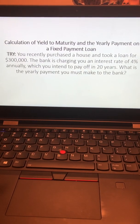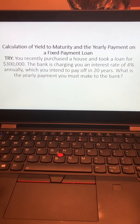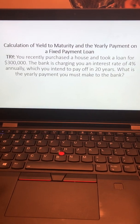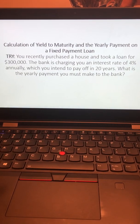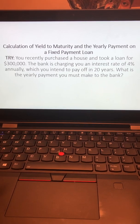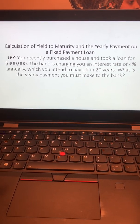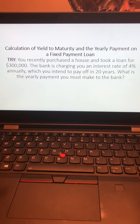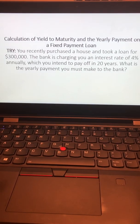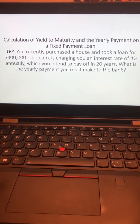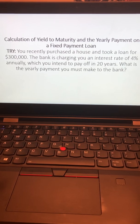So the question reads: you recently purchased a house and took a loan for $300,000. The bank is charging you an interest rate of 4% annually, which you intend to pay off in 20 years. What is the yearly payment you must make to the bank?